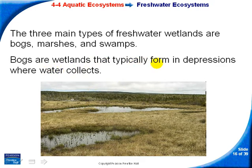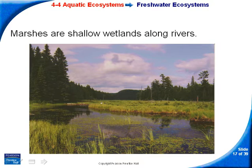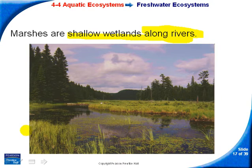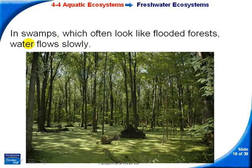A bog collects water in a depression and appears to be inland, with no visible inlet or outlet. A marsh is a wetland found along rivers — you can see a river flowing through with the marsh area alongside it. Swamps have water flowing very slowly and look like flooded forests. There is actually a distinct difference between a bog, a marsh, and a swamp, even though they're often used interchangeably.